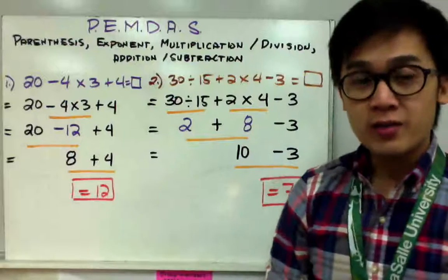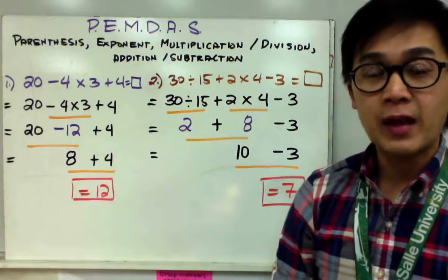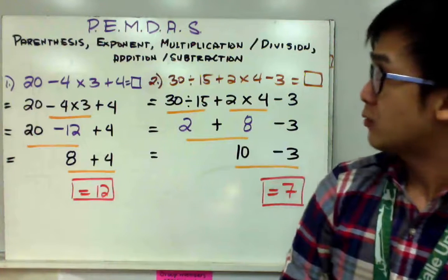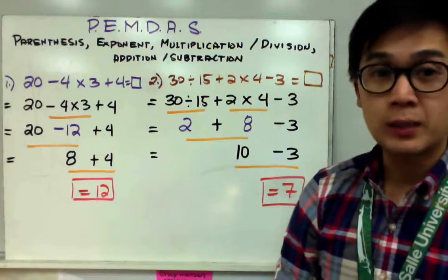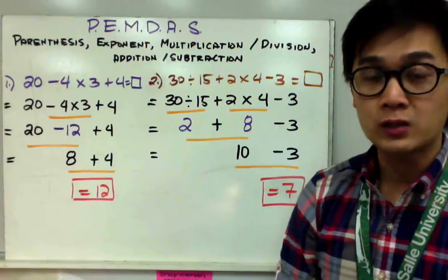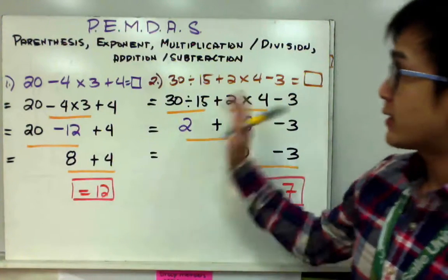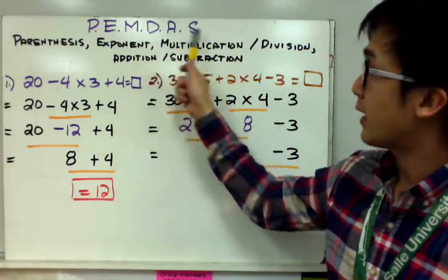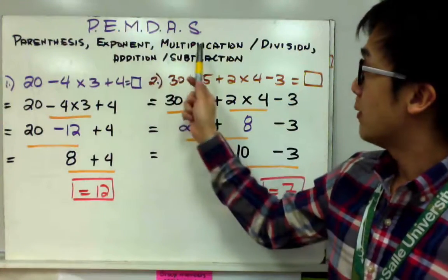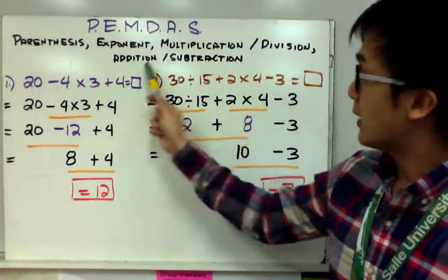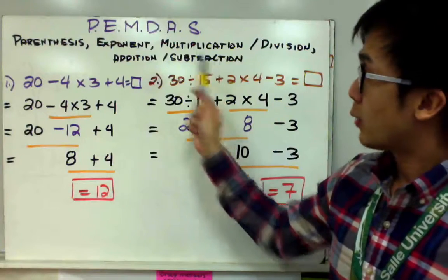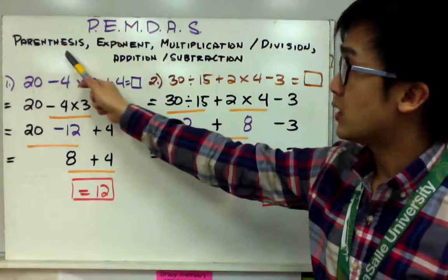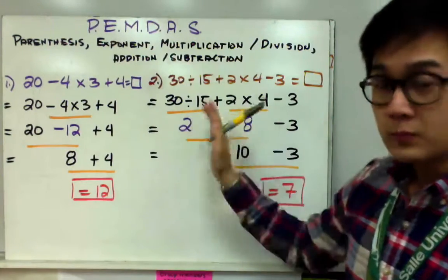For the next set of examples, the left-to-right method will no longer work because we have several different operations in one problem. In this case, we will use the famous acronym PEMDAS: Parentheses, Exponents, Multiplication or Division, and Addition or Subtraction. We will work with the operations inside the parentheses first, then exponents, and so on.